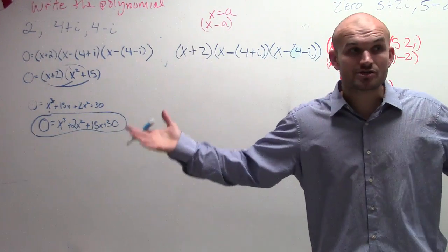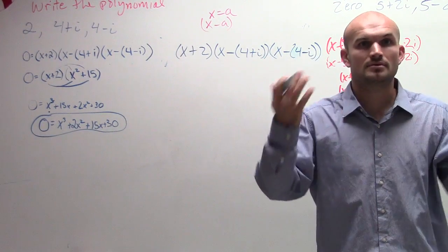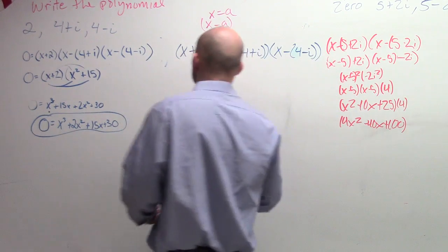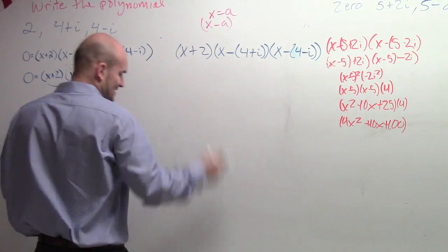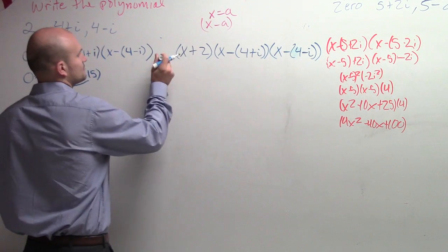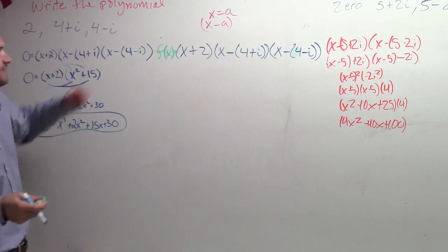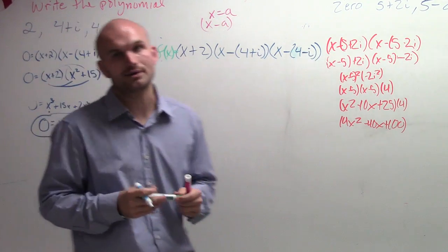Now remember the factors multiply to give you your polynomial. So we're actually not going to set this equal to zero and we're actually going to set this equal to f of x. Okay, so the student did good from there. Now what we need to do is the hard part.